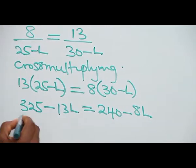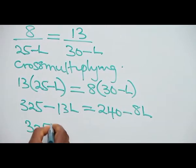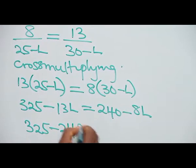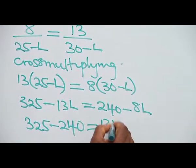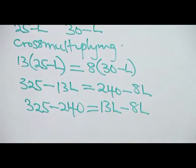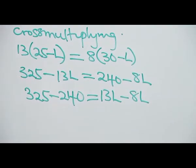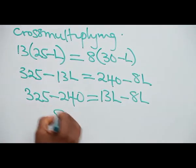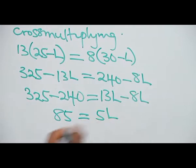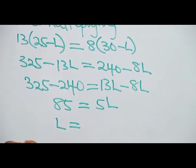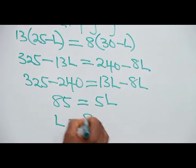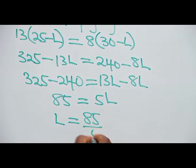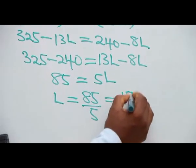Collecting like terms together, 325 minus 240 will give me 13L minus 8L. 85 is equal to 5L. The natural length of the spring is 85 divided by 5, and that's 17.0 cm.